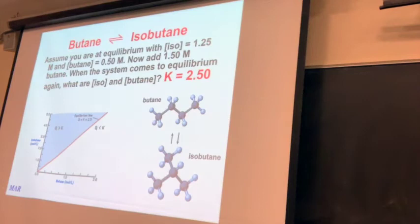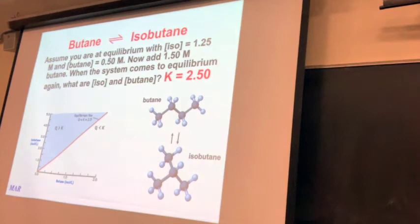More products — that's right. As you add something, the reaction shifts to the side away from what you added. So if you add a reactant, it shifts to the product side, to the right. If you added a product like more isobutane, you would expect the reaction to shift to the left, away from what you added.